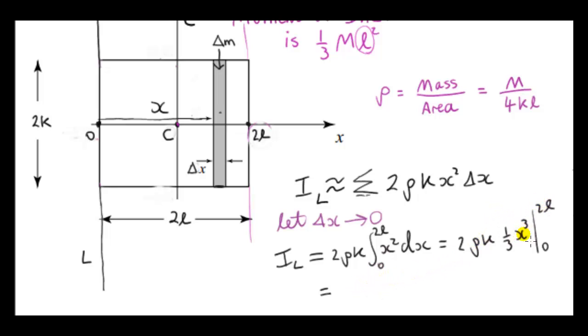So we plug 2L in here and cube it. That's going to give us 8L cubed times the two thirds, 16 thirds, rho K times L cubed. And just like before, we write rho in terms of M. So rho is the total mass of the rectangle divided by the area of the rectangle. So this will become a 2. So at last, the moment of inertia about axis L is 4 thirds ML squared.